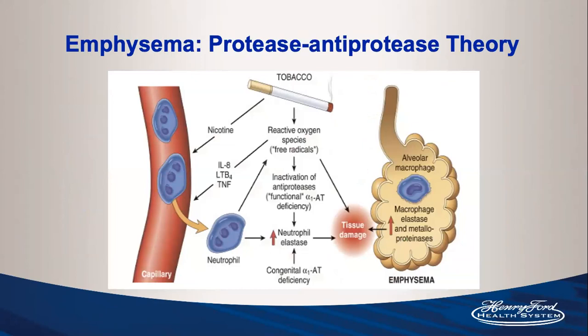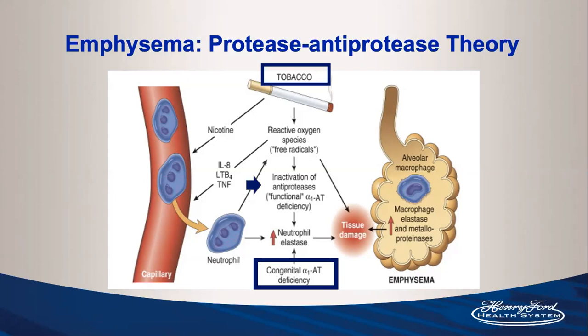Today I'll predominantly discuss congenital alpha-1 antitrypsin deficiency, but keep in mind there is also a functional deficiency every time somebody smokes. Tobacco inhalation causes reactive oxygen species and free radicals, leading to inactivation of anti-proteases like alpha-1 antitrypsin. It also causes an inflammatory response recruiting neutrophils, locally increasing neutrophil elastase, and this combination leads to tissue damage.